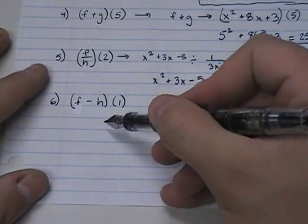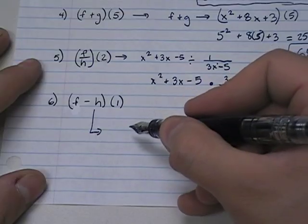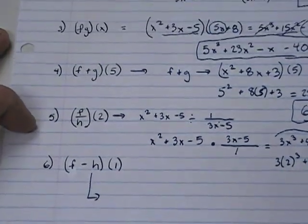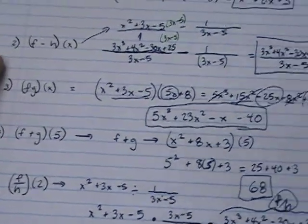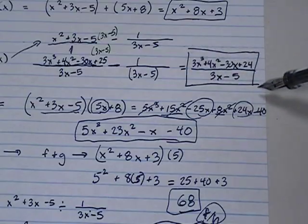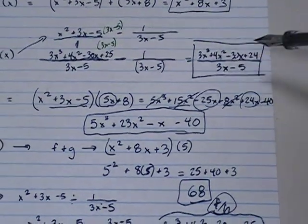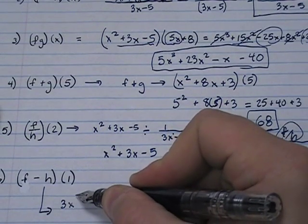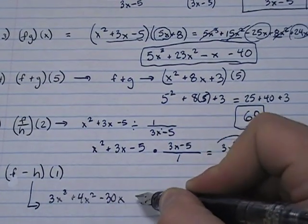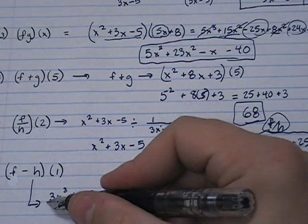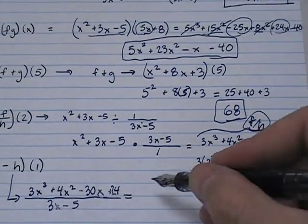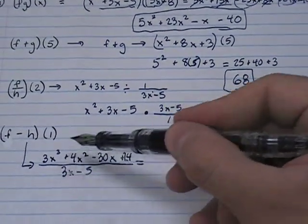So the last one is f minus h of 1. How would we do that? First thing we have to do is find f minus h. If you go up a few problems, we did f minus h. And if you follow our work for f minus h, here's what we got. We got this big mess here. So I can take that answer and copy it. f minus h was 3x cubed plus 4x squared minus 30x plus 24 over 3x minus 5. Everywhere you have x, I want you to put 1.